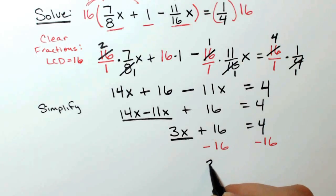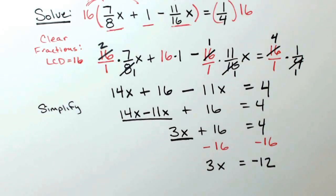I will get 3x equals negative 12, and finally I want to isolate the x, so I use my multiplication property of equality. To eliminate that coefficient, to eliminate 3, I will divide by 3, and I will have to do the same to the other side of the equation.